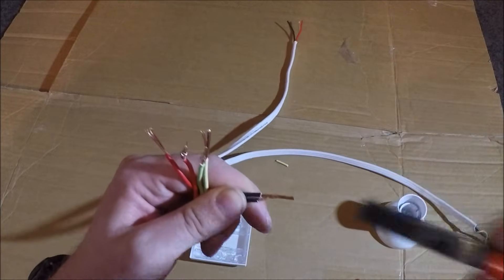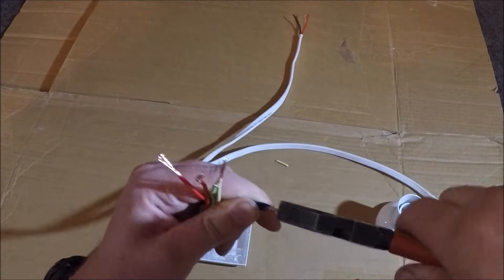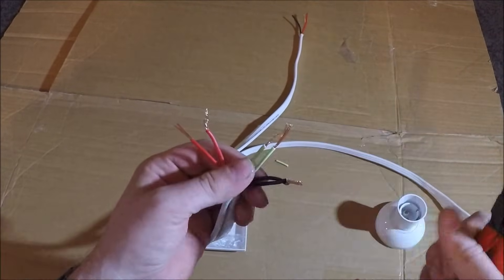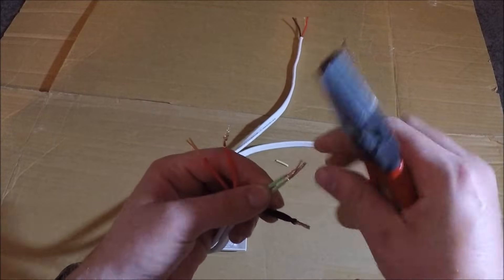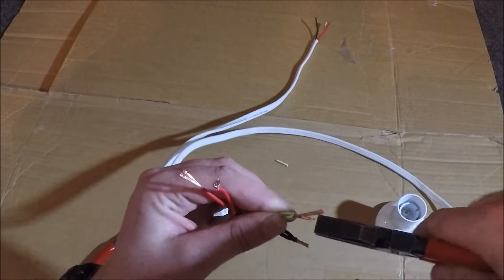The two black ones will twist together and they're your neutrals. The two green ones we will also twist together and they're your two earths.